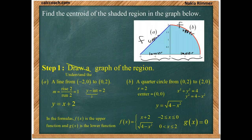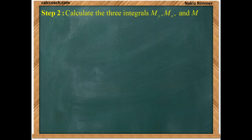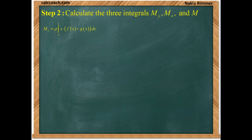We now have a good understanding of the region and are ready to calculate the three main integrals: M sub y, M sub x, and M — the moment about the y-axis, the moment about the x-axis, and the mass. First up, the moment about the y-axis. We have the general formula where there's x times f minus g, and we plug in our f and g in two separate parts.